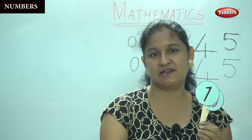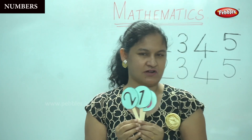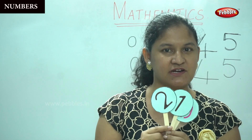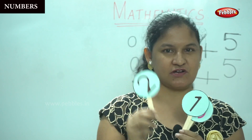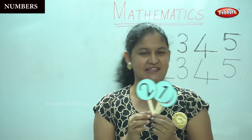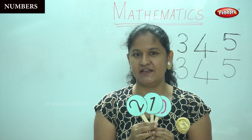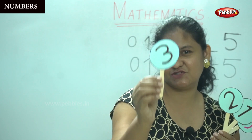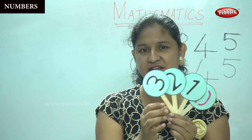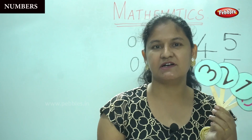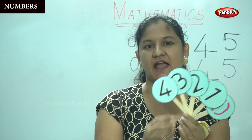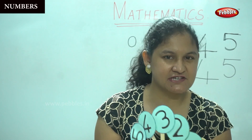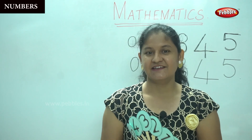Next is number 2. When mummy gives chocolates and asks you — do you want 1 or 2 chocolates? We say 2 chocolates. Why? Because 2 is bigger than 1. We all like to have the bigger number. The next number is number 3. Can you see number 3? Yes. The next number is number 4. And then we have number 5. I hope you understood, children. Are you having fun learning?